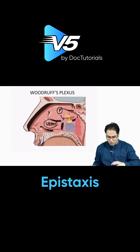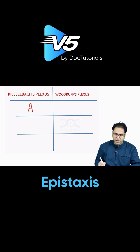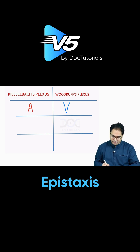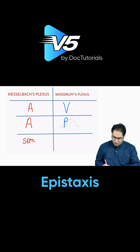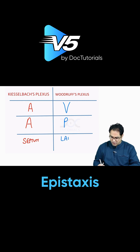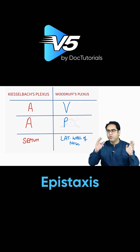You should know how to differentiate Kiesselbach from Woodruff. First, Kiesselbach is an arterial plexus and Woodruff is venous. Second, Kiesselbach is in the anterior part of the nose and Woodruff is in the posterior part of the nasal cavity. Third, Kiesselbach is on the septum — specifically the antero-inferior part — while Woodruff plexus is on the lateral wall of the nose, just above the inferior turbinate. To revise: Kiesselbach plexus is arterial, Woodruff is venous.